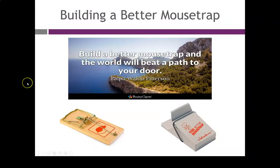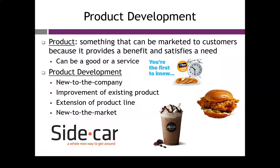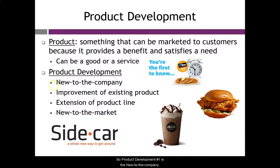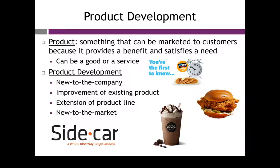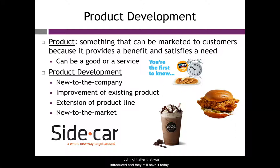Let's move on to product development. There are four main product development categories. To help understand them, I'm going to use fast food examples. Product development number one is 'new to the company' — something competitors may have had, but you didn't. An example is McDonald's all-day breakfast, introduced in October 2015. Before that, you could get all-day breakfast at other places but not at McDonald's. That was new to the company for McDonald's, and it obviously worked out very well — their stock went up right after it was introduced.